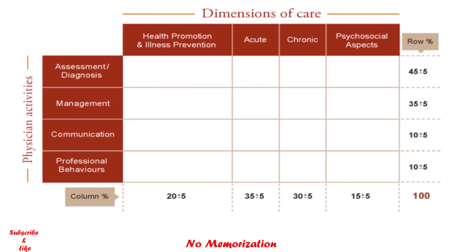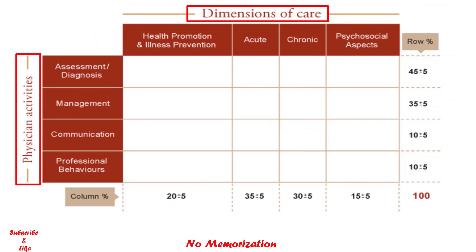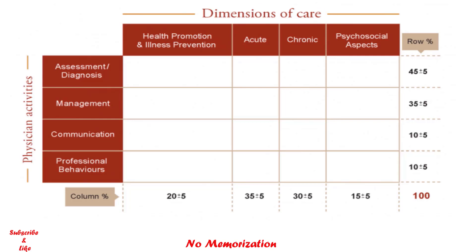Now let's focus on how that blueprint works. This blueprint has two dimensions. One is called 'dimensions of care' and the other is called 'physician activities.' The dimensions of care include four dimensions: health promotion and illness prevention, acute care, chronic care, and psychosocial aspects of care.